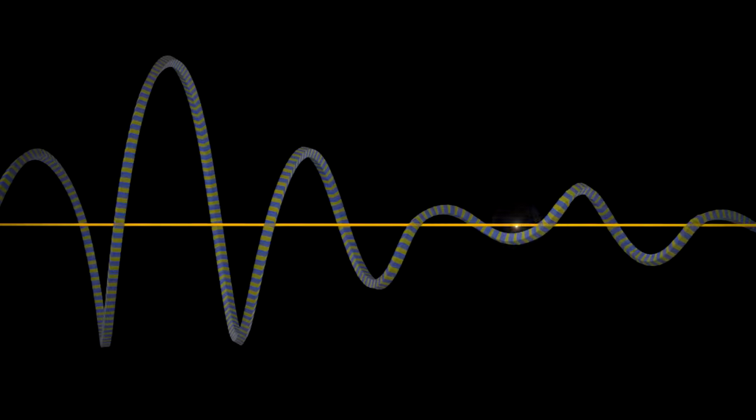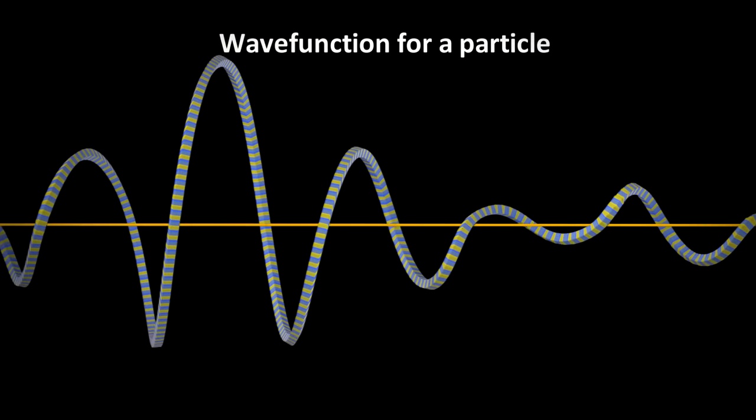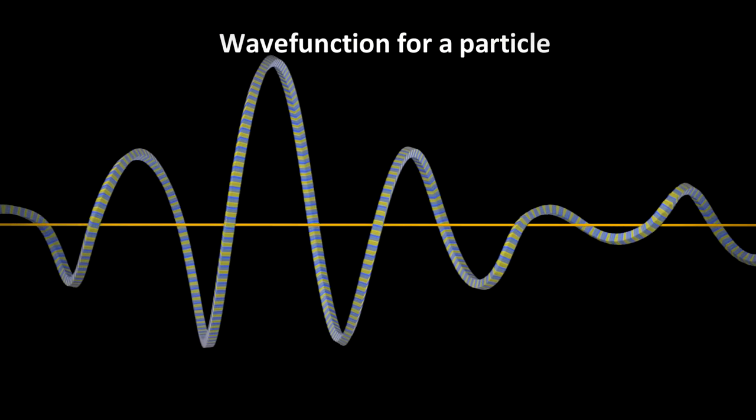But quantum mechanics doesn't let us do that for a particle. All it tells us is where the particle could be at the later time, and what's the probability we'll find it there.